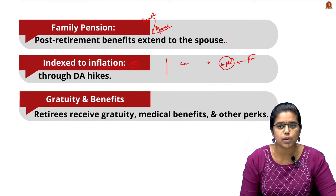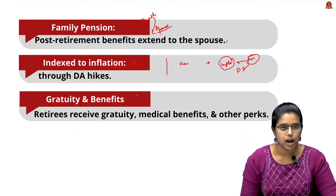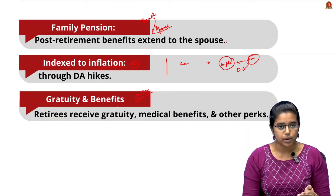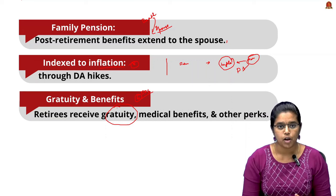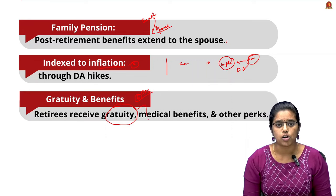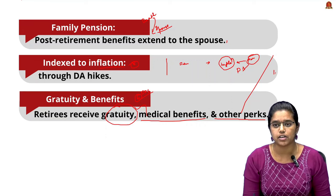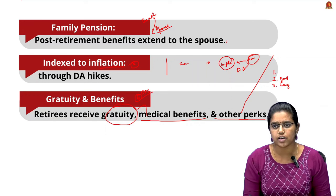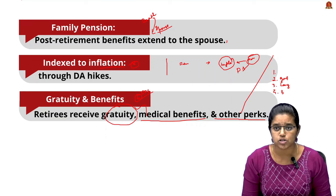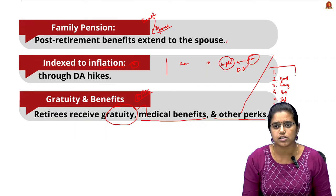The last important feature of the OPS is gratuity and benefits — upon retirement, the employee receives a lump sum gratuity along with medical benefits and other perks. In summary, the OPS provides a defined benefit totally funded by the government, offers long-term financial security, transfers to the spouse upon death, adjusts for inflation, and provides a gratuity lump sum at retirement.